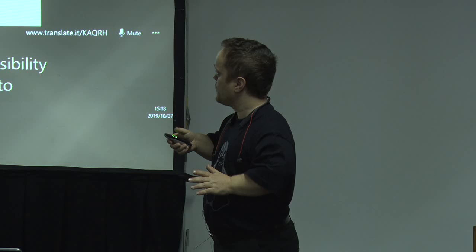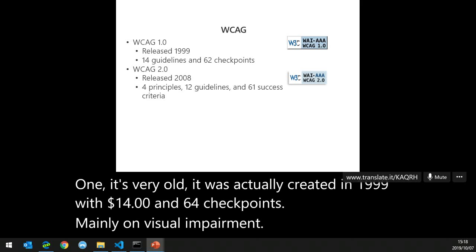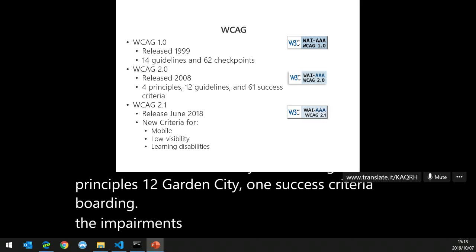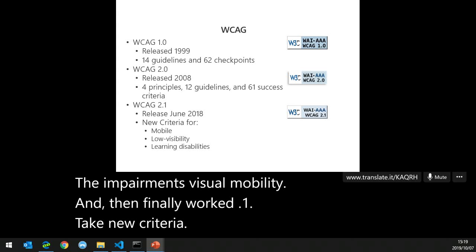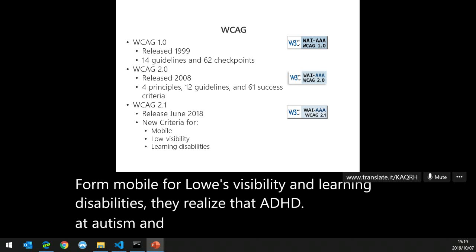What is WCAG — the accessibility standard we need to follow, and how does it apply to the web? It's very old; it was created in 1999 with 14 guidelines and 64 checkpoints, mainly on visual impairment. Then WCAG 2.0 broadened it to four principles, 12 guidelines, and 61 success criteria, covering visual and mobility impairments. WCAG 2.1 added new criteria for mobile, low vision, and learning disabilities — including ADHD and autism — recognizing they were part of the spectrum.